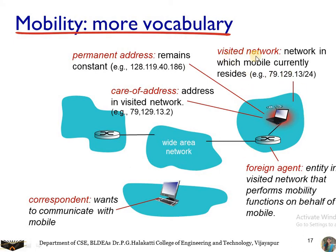The visited network, also called the foreign network, is the network where the mobile is currently residing after moving from home. In the visited network, the device is assigned a care-of address — the address of its current location. The care-of address is temporary and changes as the device moves from one location to another, whereas the permanent address remains fixed.